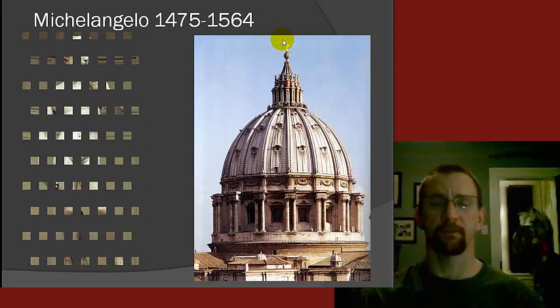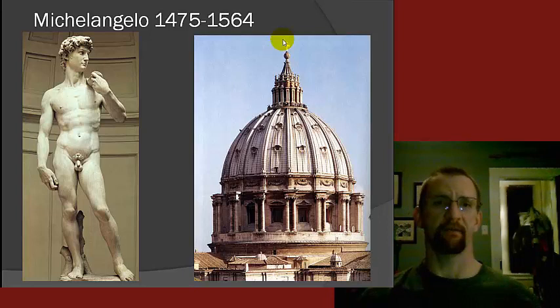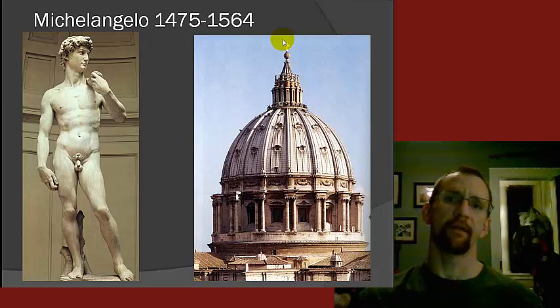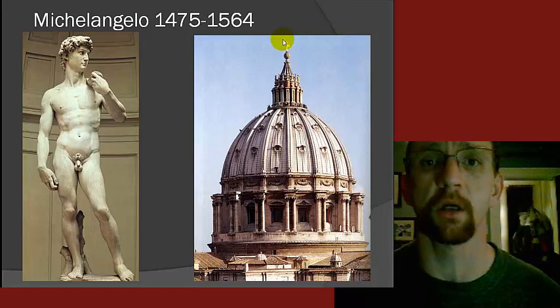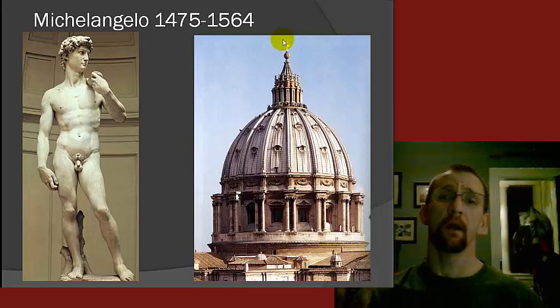Next is Michelangelo's David. It's a sculpture, and if you think about the characteristics of the Renaissance — that art shows more motion and is more realistic — David is an idealized form of a real human. I don't know many people that look like that. I want you to take this in two ways: one, this is obviously King David from the Bible who defeated Goliath.